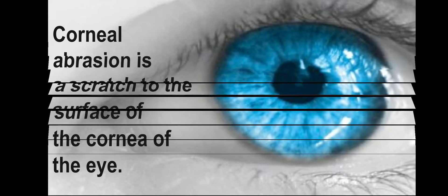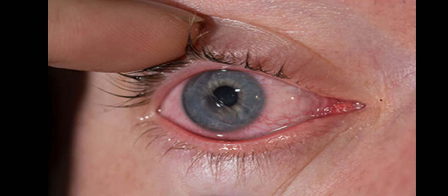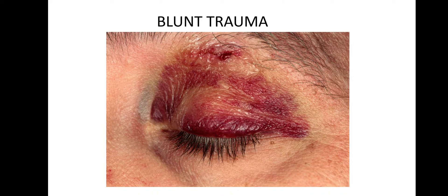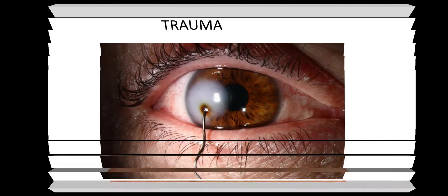Such scratches are called corneal abrasions. They are typically due to foreign bodies. The causes of corneal abrasions include: first, blunt trauma — mainly blunt globe trauma. The next cause is sharp objects. Any sharp object can cause corneal injuries, such as paper edges, fingernails, and needles.